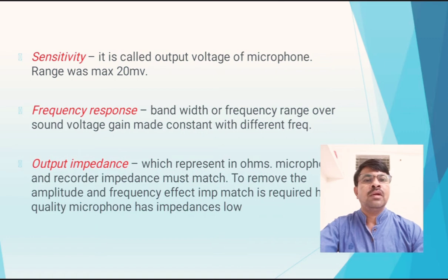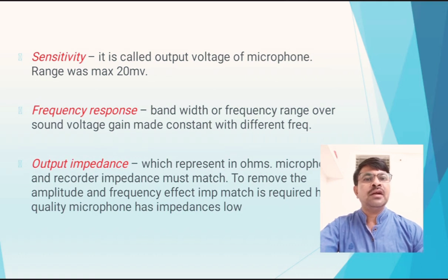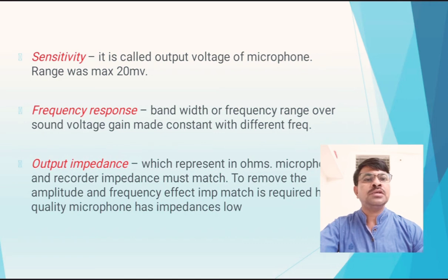Output impedance: it is represented in ohms. The microphone output is connected to a pre-amplifier circuit or a tape recorder circuit. To transfer maximum power from the microphone to the amplifier, impedance matching is required. For impedance matching, inbuilt transformers are present in the amplifier circuit as well as at the microphone output. If impedance matching is not maintained, amplitude and frequency effects will be present. So impedance matching is important.